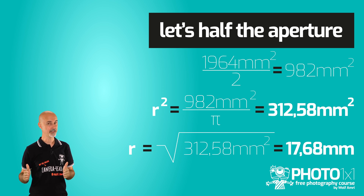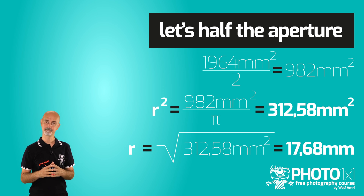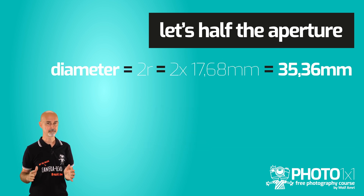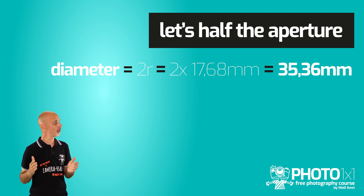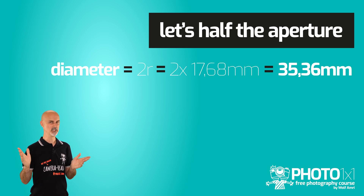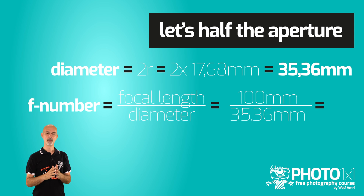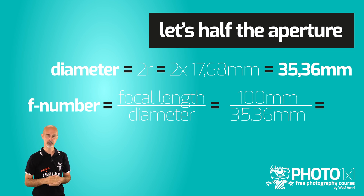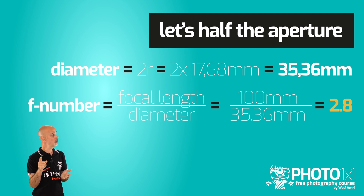And that's r². Now let's get the square root to get r — or in other words the radius of the aperture — which is 17.68. The radius is half the diameter, so multiply that by 2 and we get 35.36mm for the diameter.